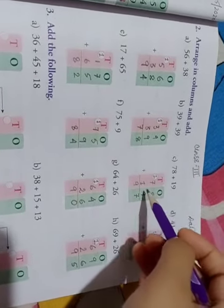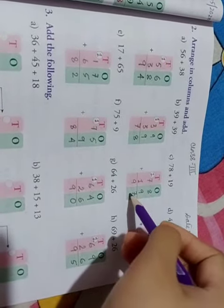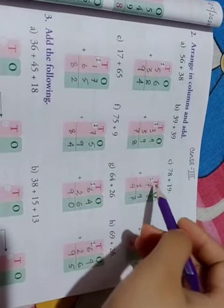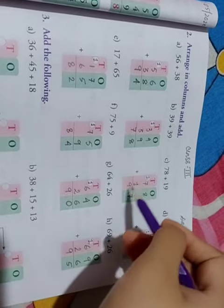Next one, 9 plus 8 is 17, 1 is carried over. 7 plus 1 is 8, 8 plus 1 is 9.